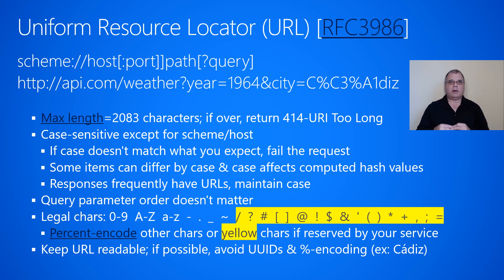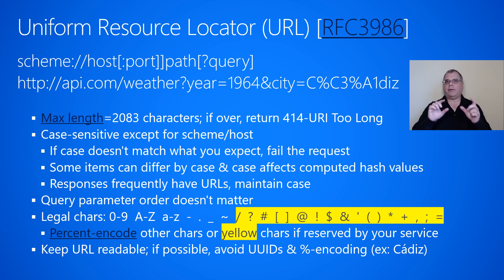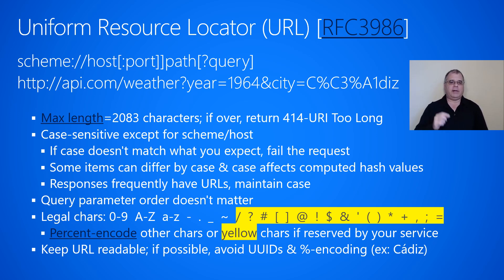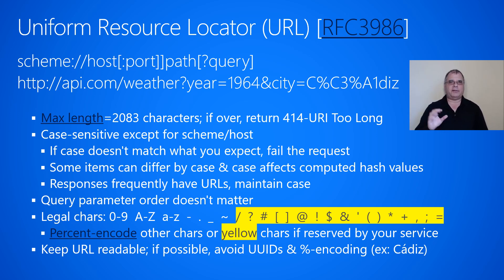The legal characters in a URL are digits 0 through 9, uppercase A through Z, lowercase a through z, and four other symbols: hyphen, period, underscore, and tilde. These characters can be used anywhere in the URL. There are other characters you can use, shown with a yellow background, but depending on where those characters are used in the URL, you may have to URL-escape them. For example, the ampersand in a query parameter separates one parameter from another, but if it appears inside a path segment, it doesn't need to be escaped. There is percent encoding to handle these reserved characters.